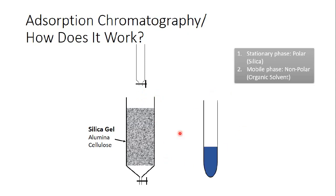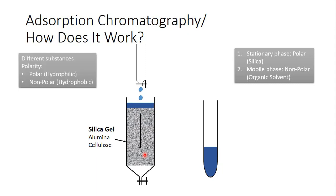Let's say I have a sample and I need to separate the substances in my sample. I have to apply my sample on the stationary phase and then start to flush the column with the mobile phase. The mobile phase will move down through the stationary phase and take the sample with it. The force moving the solutions down is simply gravity. Different substances in the mixture have different degrees of polarity.